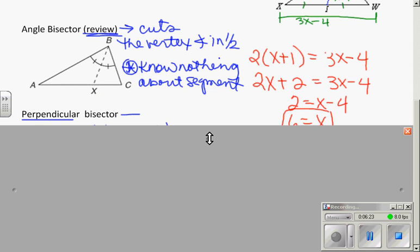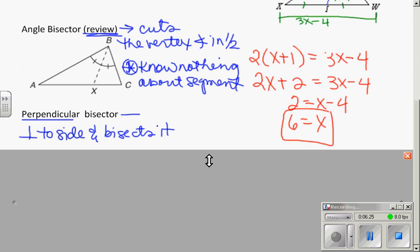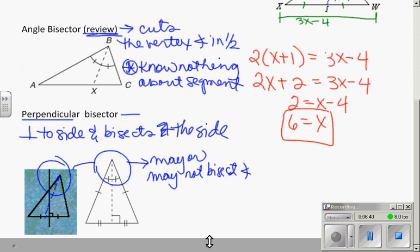All right. Perpendicular bisector. Perpendicular bisector is perpendicular to the side, and it bisects the side. As the name implies. But notice from these pictures, we know nothing about what happens at the angle. It may or may not bisect the angle. We just know it has to be perpendicular and bisect that side.